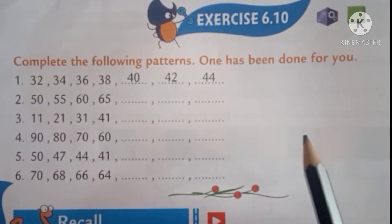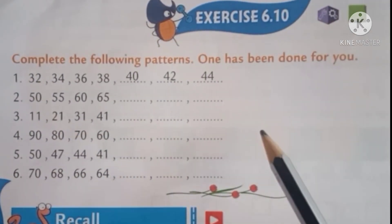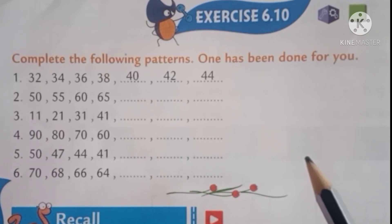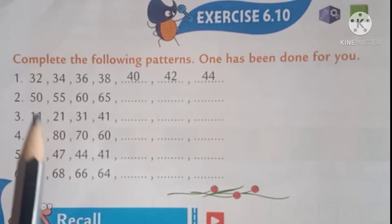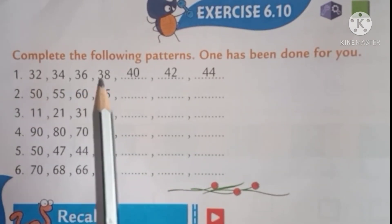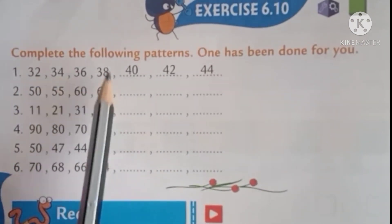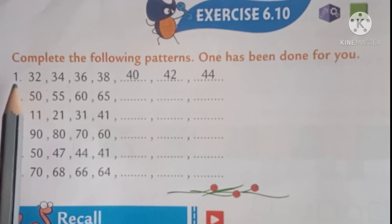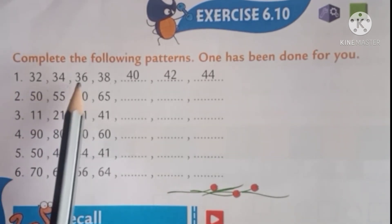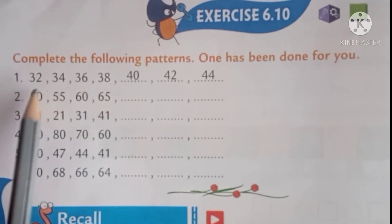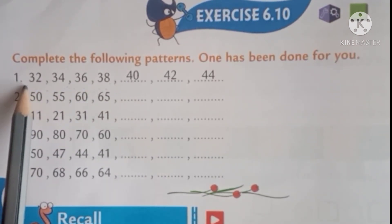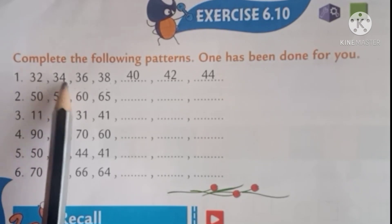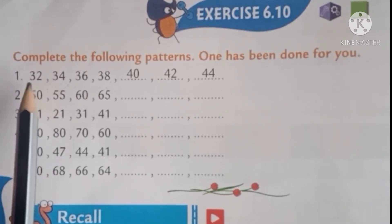Next is number patterns. Complete the following patterns. One has been done for you. What is a pattern? There is a relationship between these numbers, so the numbers are relational. 32, 34, 36, 38. What is the relation between these numbers? Counting by 2's.